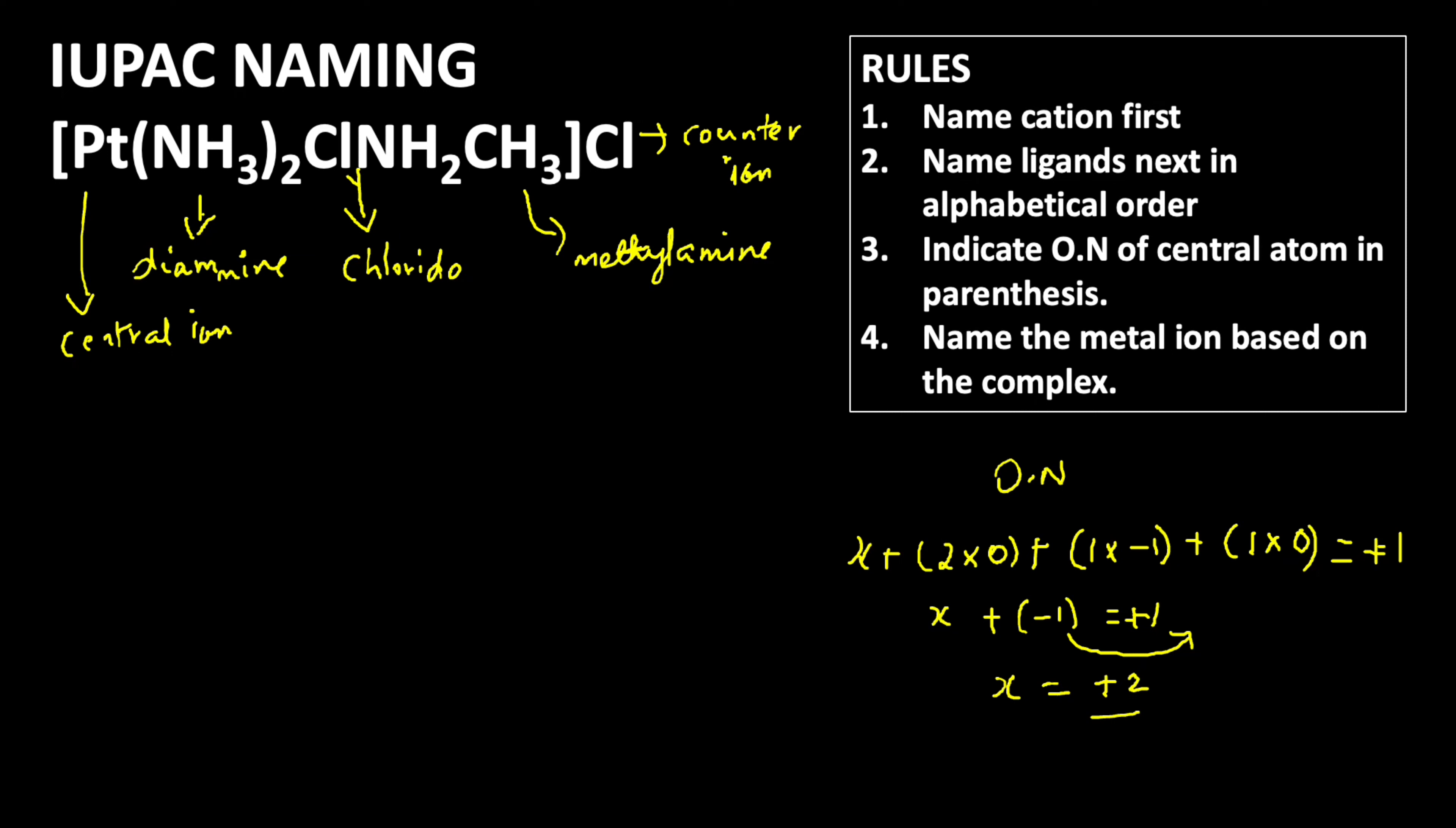So now we can write diamine, because as per the alphabetical order we are writing. So amine should get the first priority, diamine, then the next priority goes to chlorido, then after that methylamine. Methylamine, then platinum, the oxidation state is two.